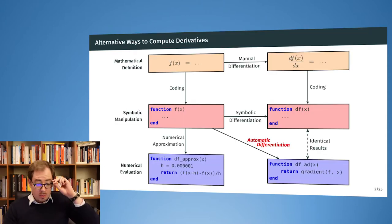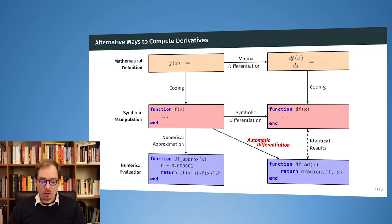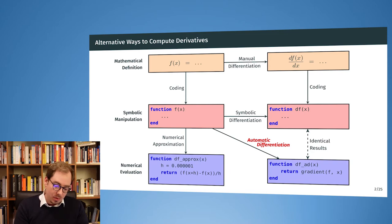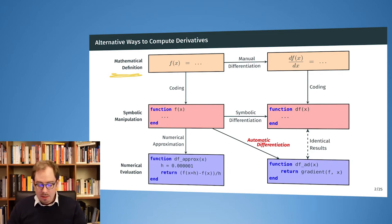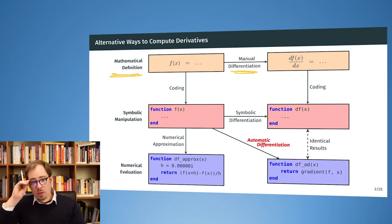What are the different ways to compute derivatives — the gradient for gradient descent or even the Hessian for Newton's method? At the top level, we are in the mathematical universe: we write down the function definition on paper and manually apply the chain rule, product rule, and so on to get the derivative.